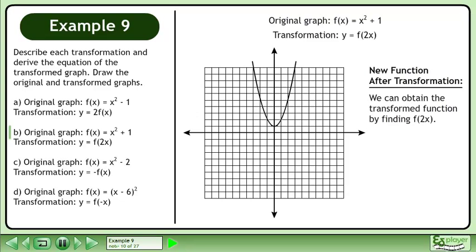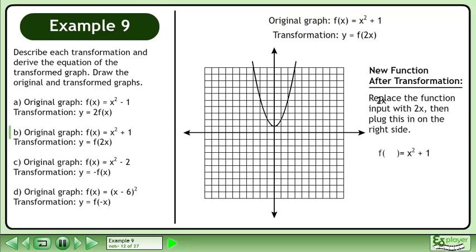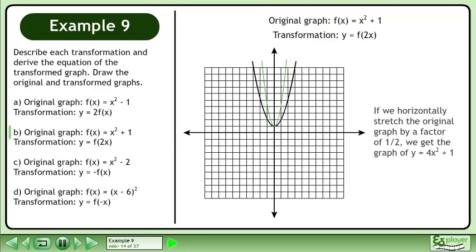We can obtain the transformed function by finding f of 2x. Start with the function of the original graph. Replace the function input with 2x, then plug this in on the right side. 2x in brackets, squared, is 4x squared. The equation of the transformed graph is f of 2x equals 4x squared plus 1. If we horizontally stretch the original graph by a factor of 1 half, we get the graph of y equals 4x squared plus 1.